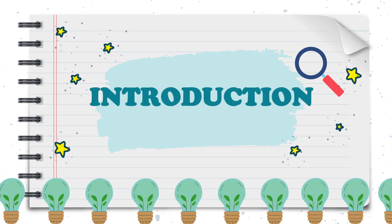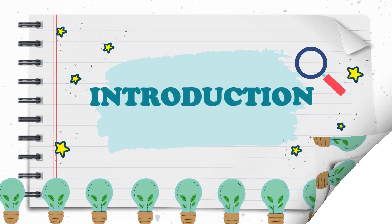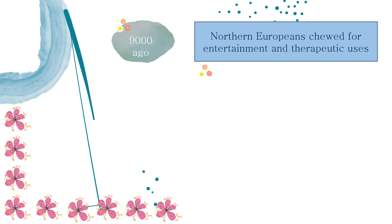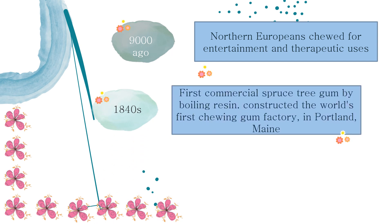Introduction. About 9,000 years ago, Northern Europeans chewed for entertainment and therapeutic uses such as relieving toothaches. In the late 1840s, John Curtis developed the first commercial spruce tree gum by boiling resin, then cutting it into strips that were coated in cornstarch to prevent them from sticking together.